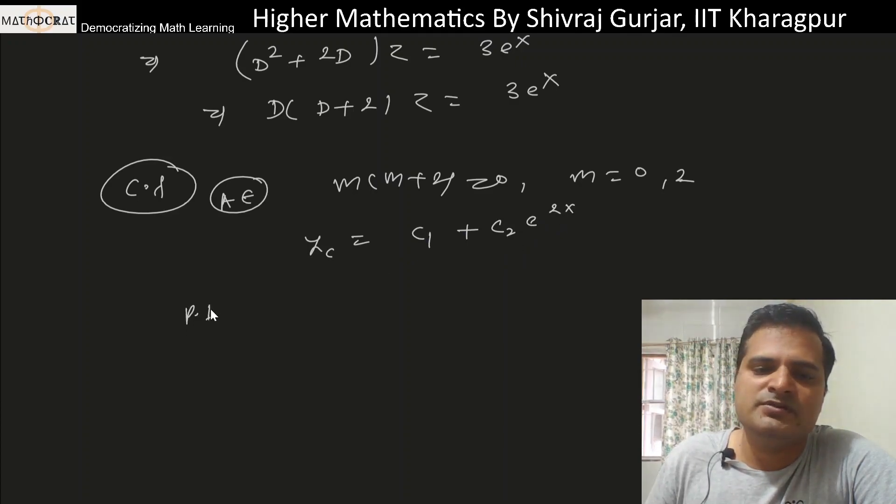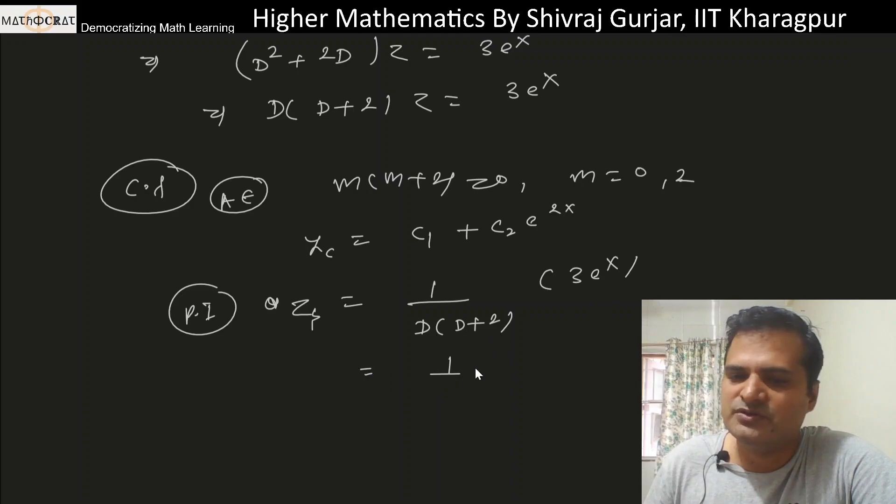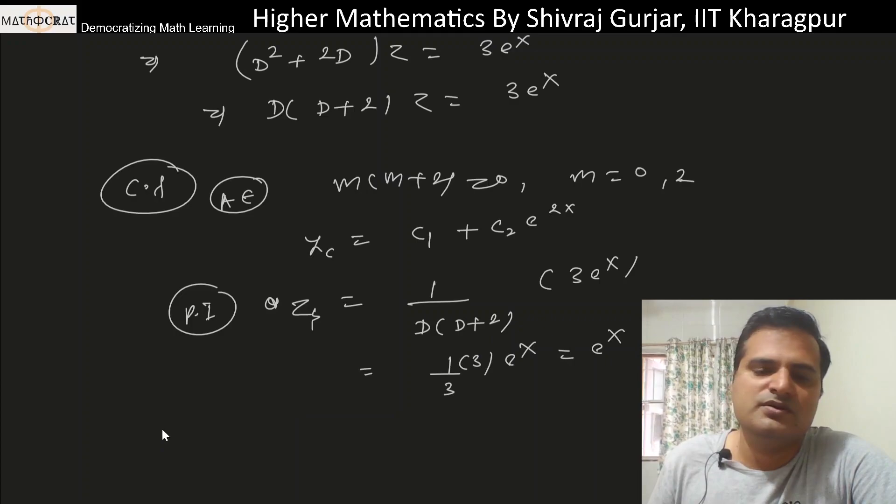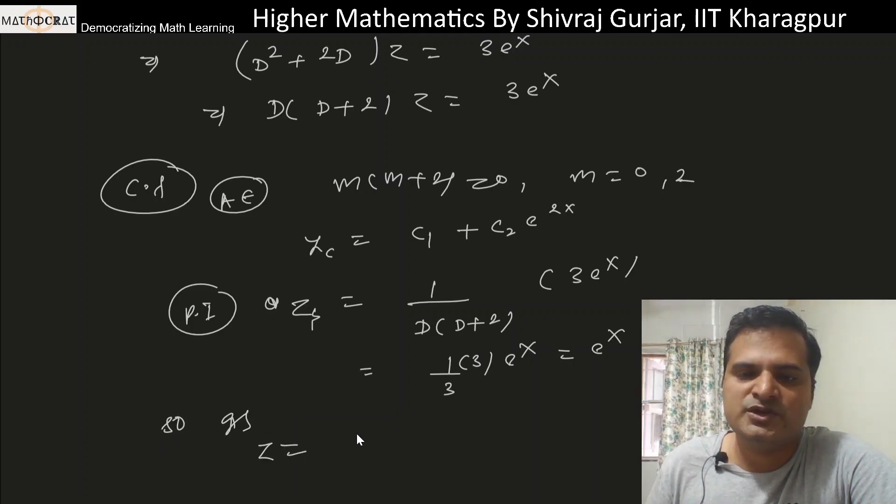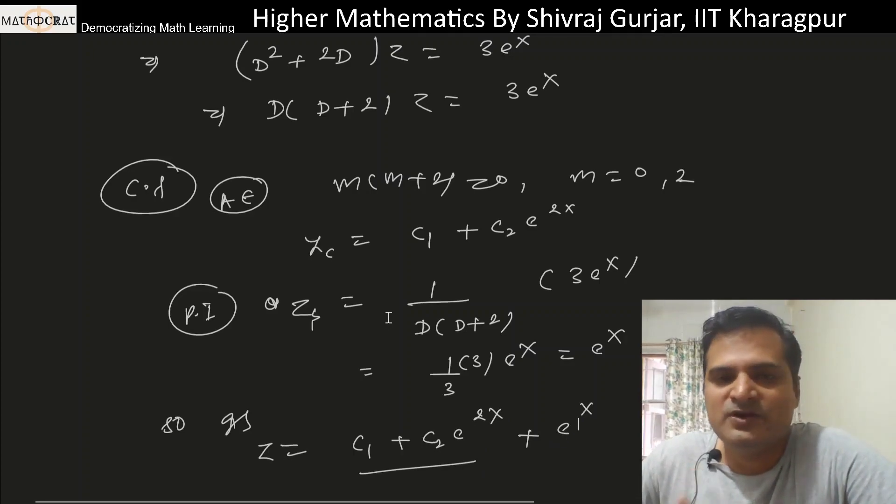For the particular integral, that will be z_p = 1/(D(D+2)) applied to 3e^x. Since D is the coefficient of x, which is 1, replacing D with 1 gives 3/(1×3) = e^x. So our general solution for z is: z = C₁ + C₂e^(-2x) + e^x, where the complementary part plus particular part gives e^x.